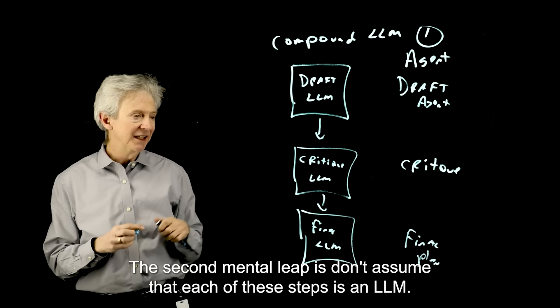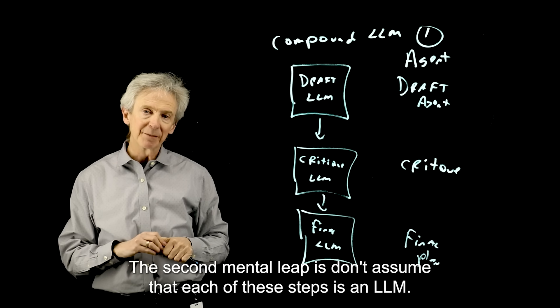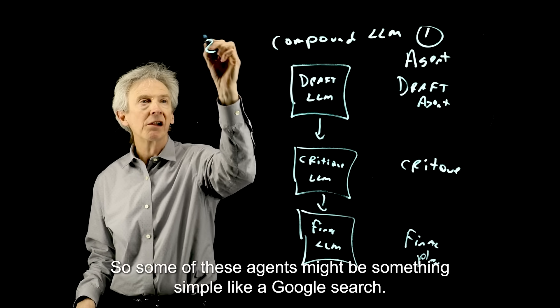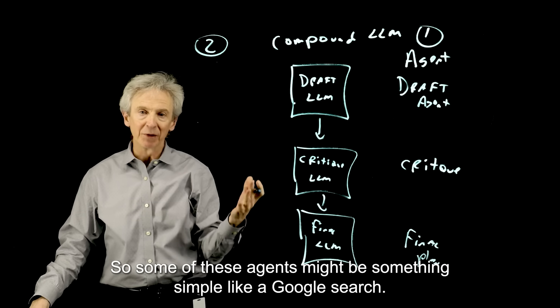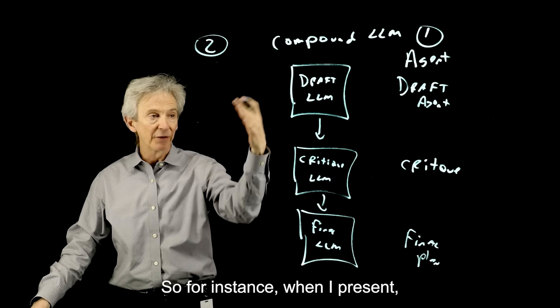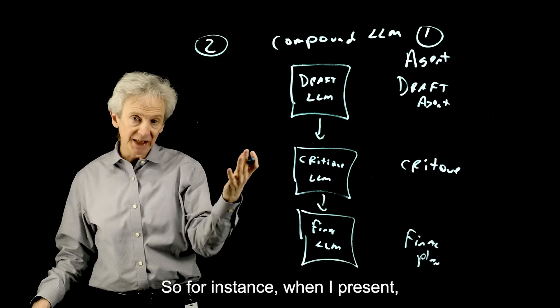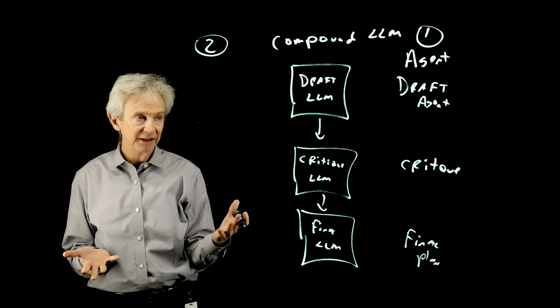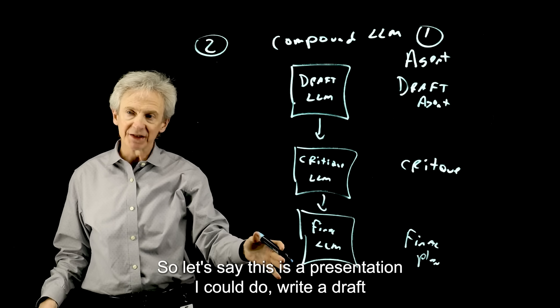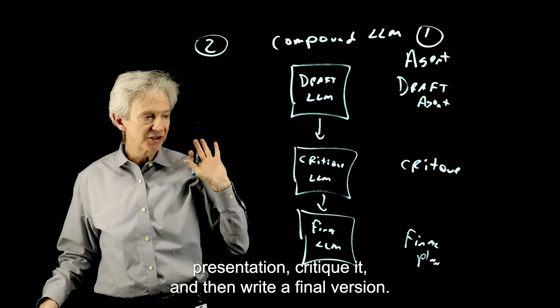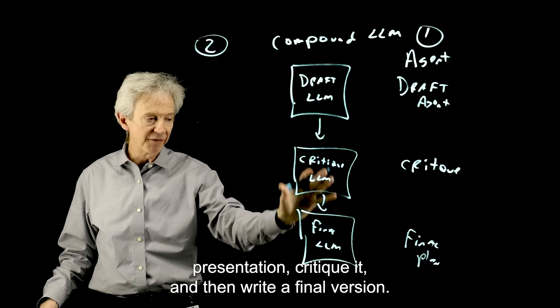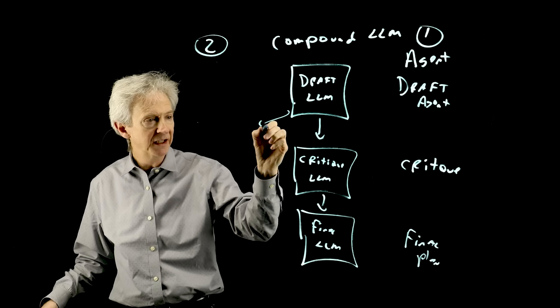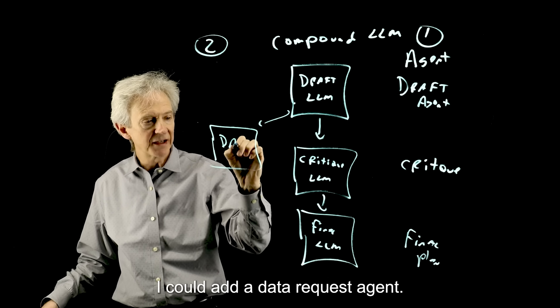The second mental leap is don't assume that each of these steps is an LLM. Okay, so some of these agents might be something simple like a Google search. So for instance, when I present, I usually like to present some statistics to support my point. Okay, so let's say this is a presentation. I could do a write a draft presentation, critique it, and then write a final version.